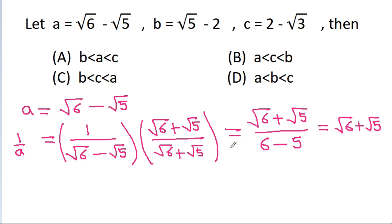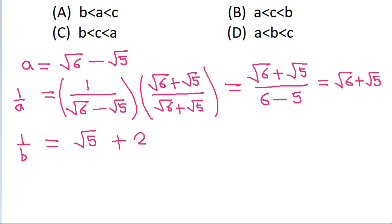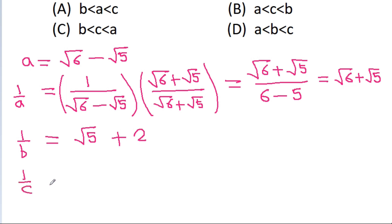In the same way, root 5 squared minus 2 squared is also 1. So 1 by b will be equal to root 5 plus 2. And 2 squared minus root 3 squared is also 1. So 1 by c will be equal to 2 plus root 3.